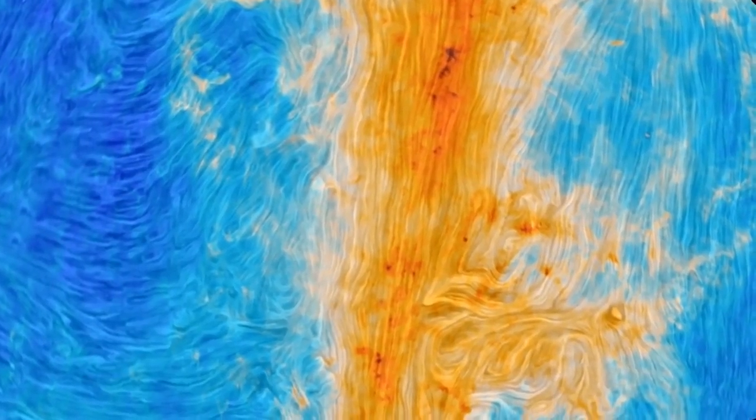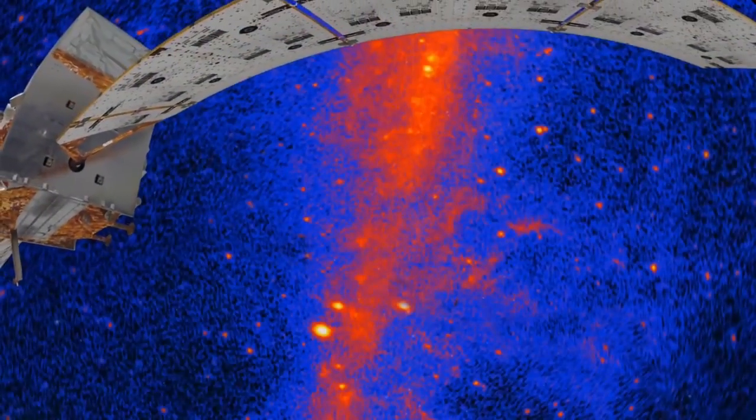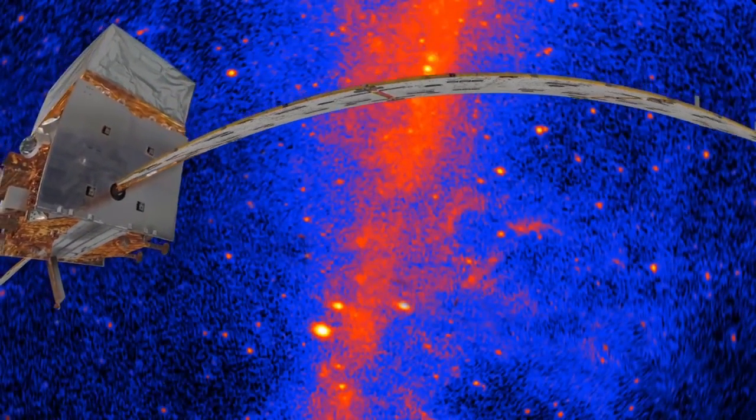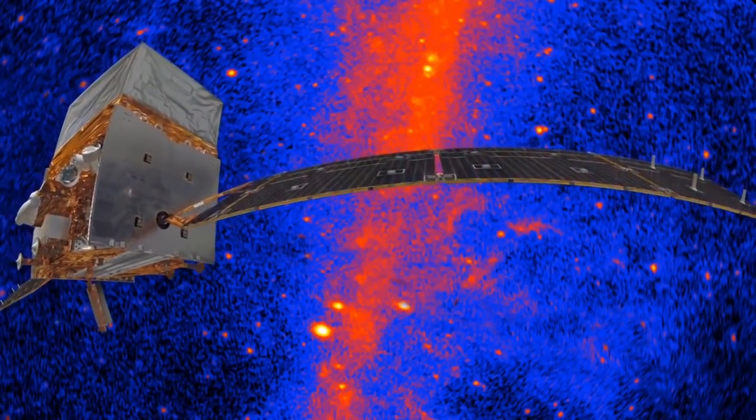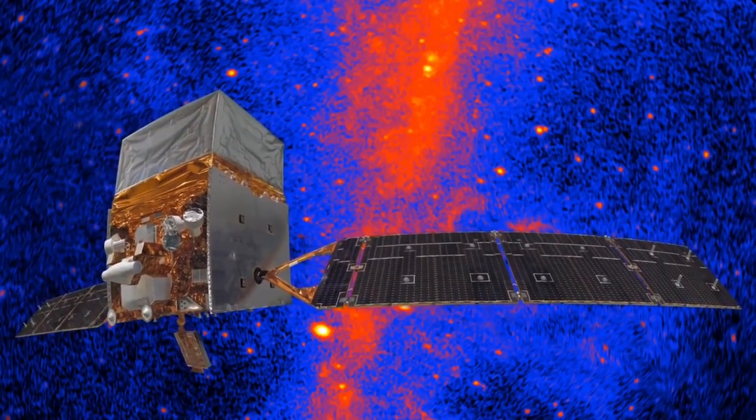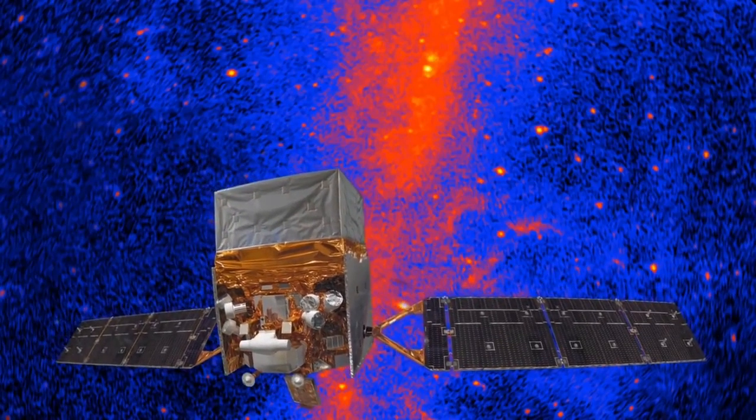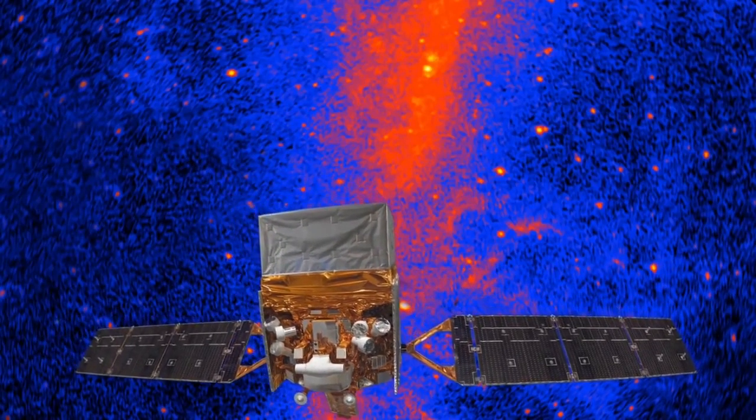Our galaxy also looks very different in gamma rays, the most energetic part of the spectrum. Orbiting gamma ray observatories like Fermi can pinpoint the most energetic light sources in the universe. These are often collapsed stars with tightly wound magnetic fields focusing the light they emit.